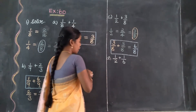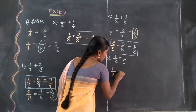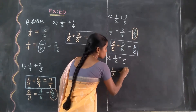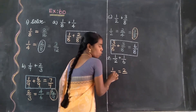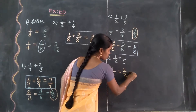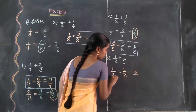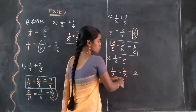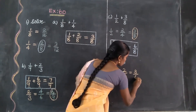First, consider 1 by 2. Using the 1 times table: 1 one is 1, 1 two is 2. Then the 2 times table: 1 two is 2, 2 twos are 4, 3 twos are 6. We continue until we reach 3 twos are 6, since the second fraction's denominator value is 6.